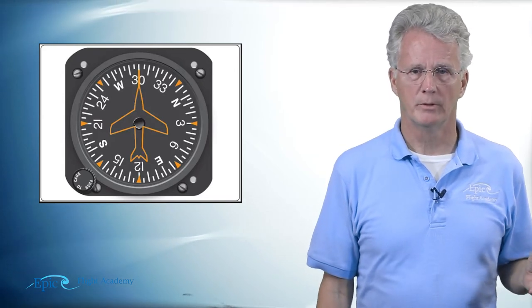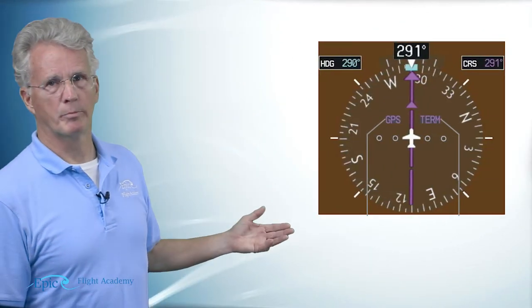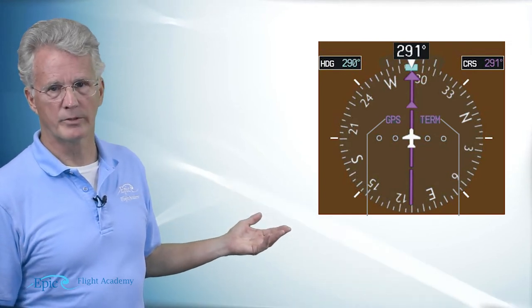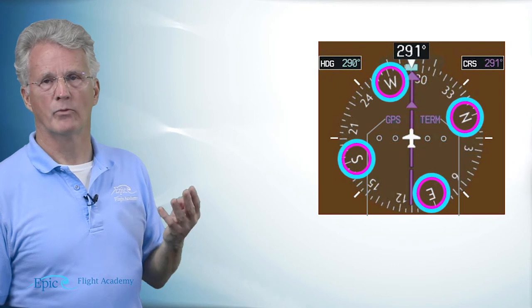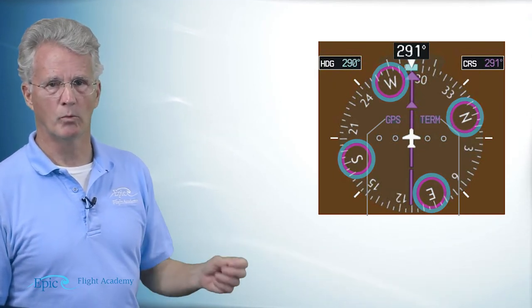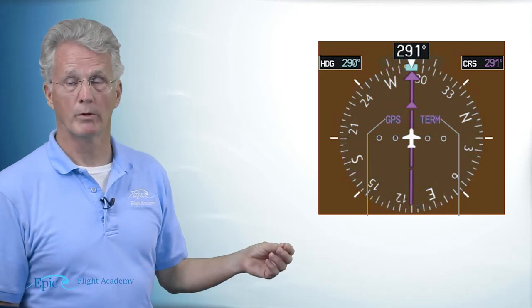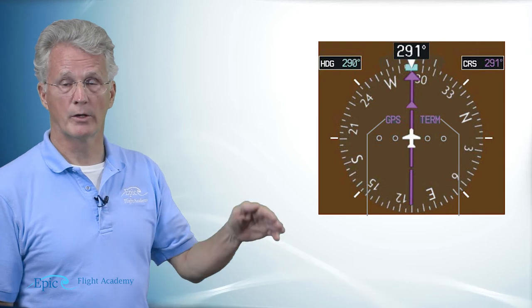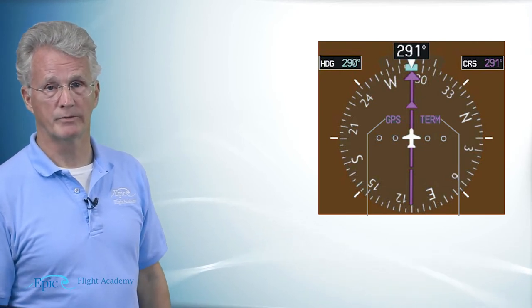When we're looking at the heading indicator on the G1000, here is a blow up of what that looks like. Notice it's very similar. We've got four letters for four main cardinal headings and then big white numbers for every 30 degrees, and then those are divided up into tens and fives.